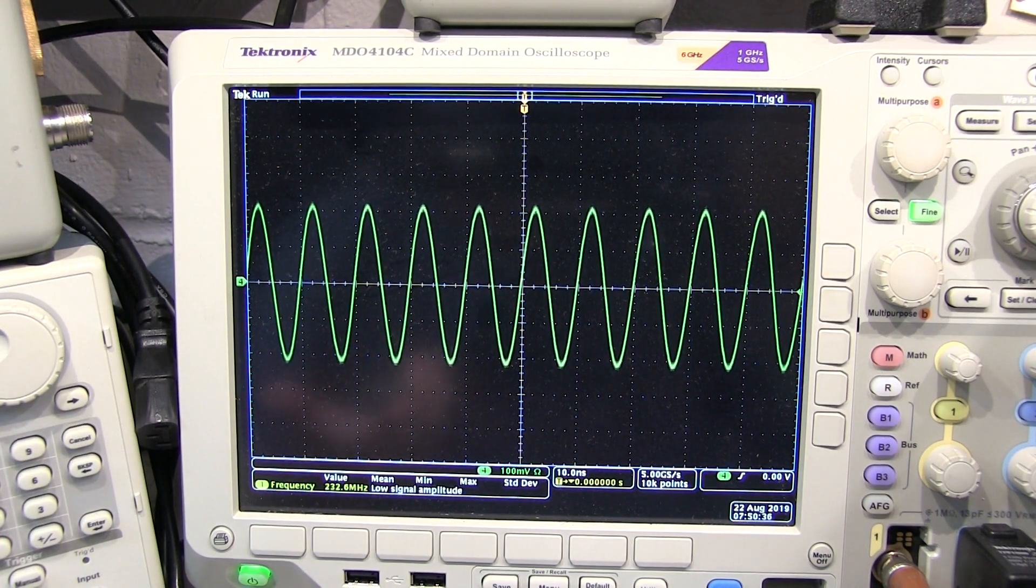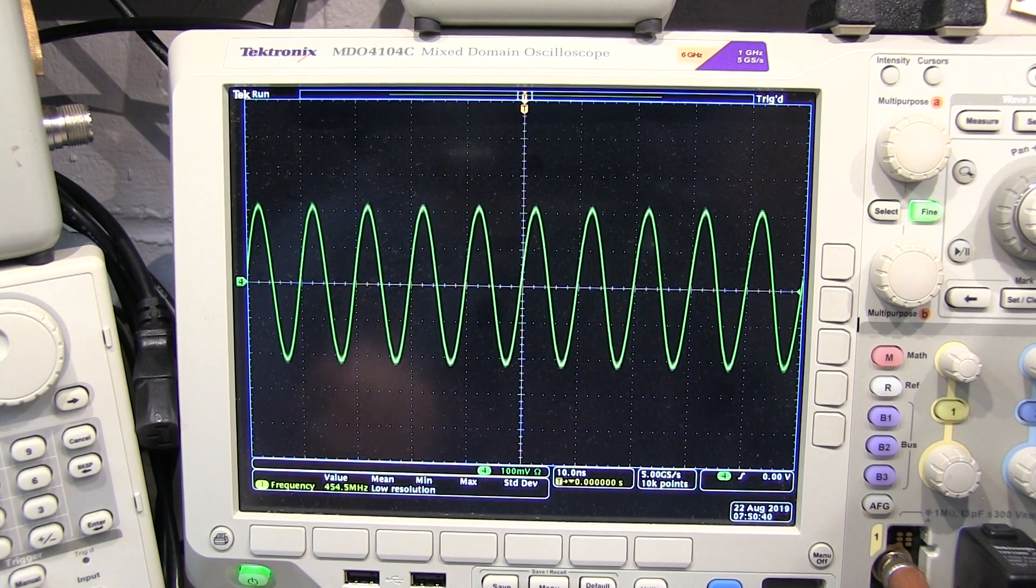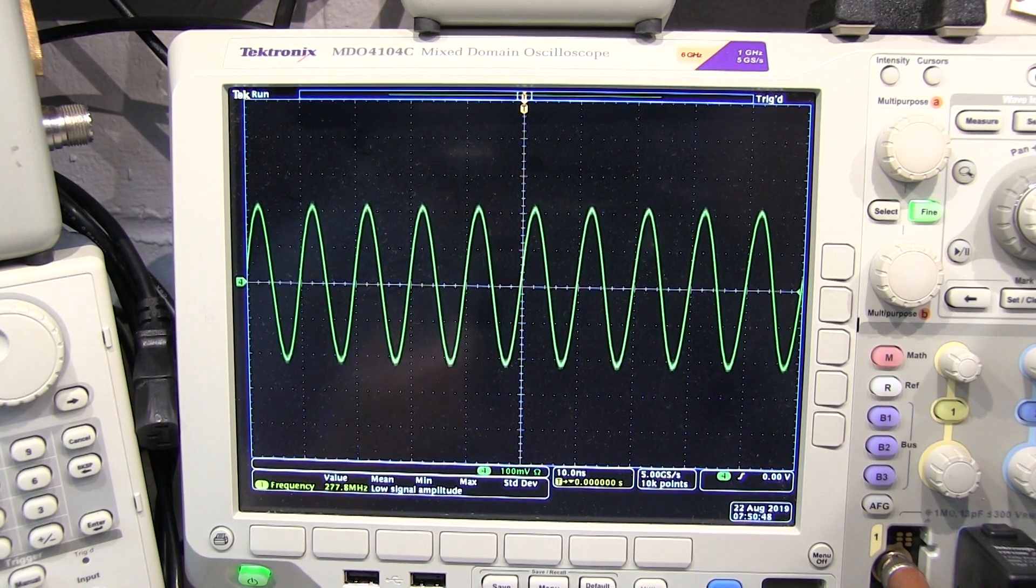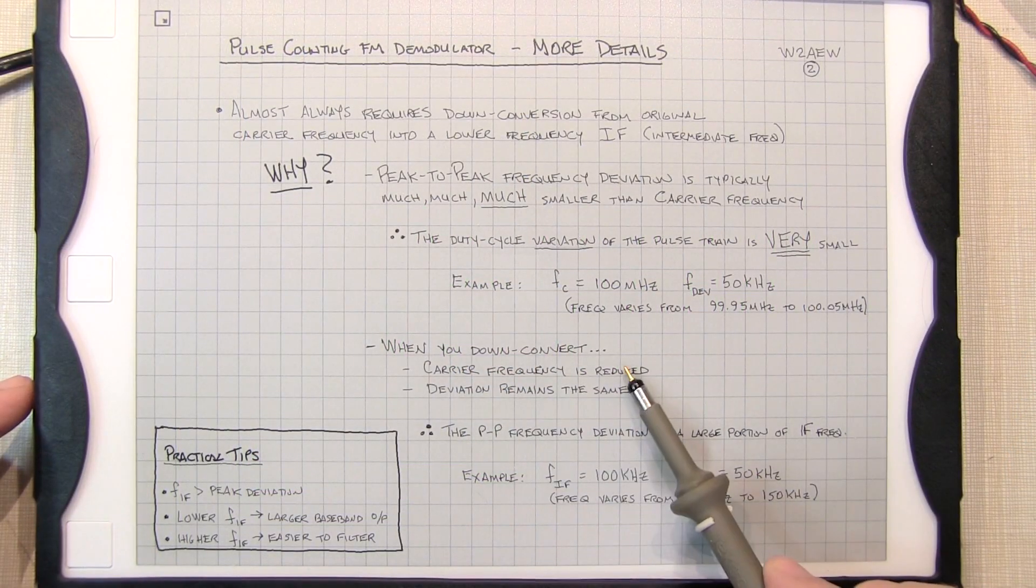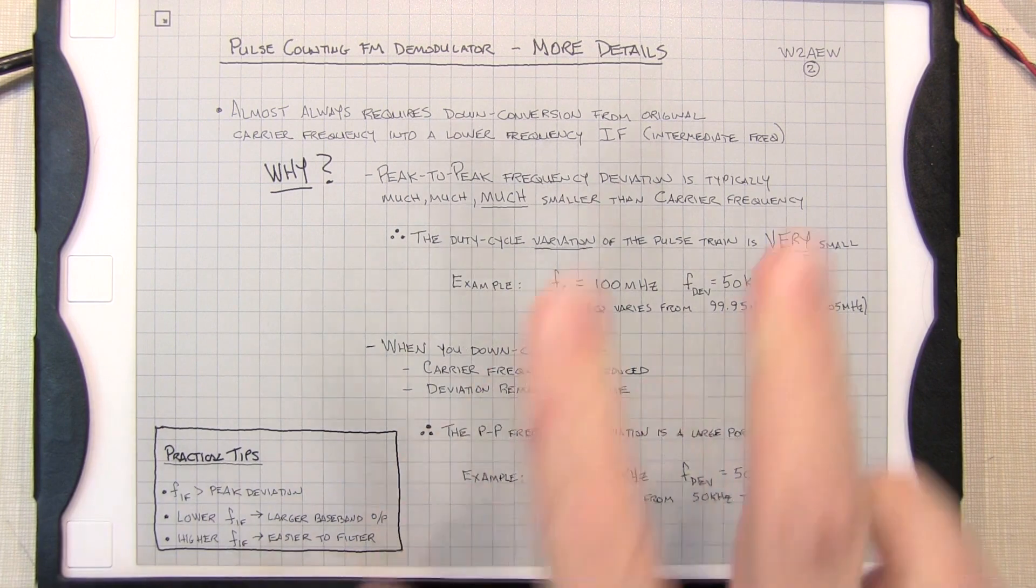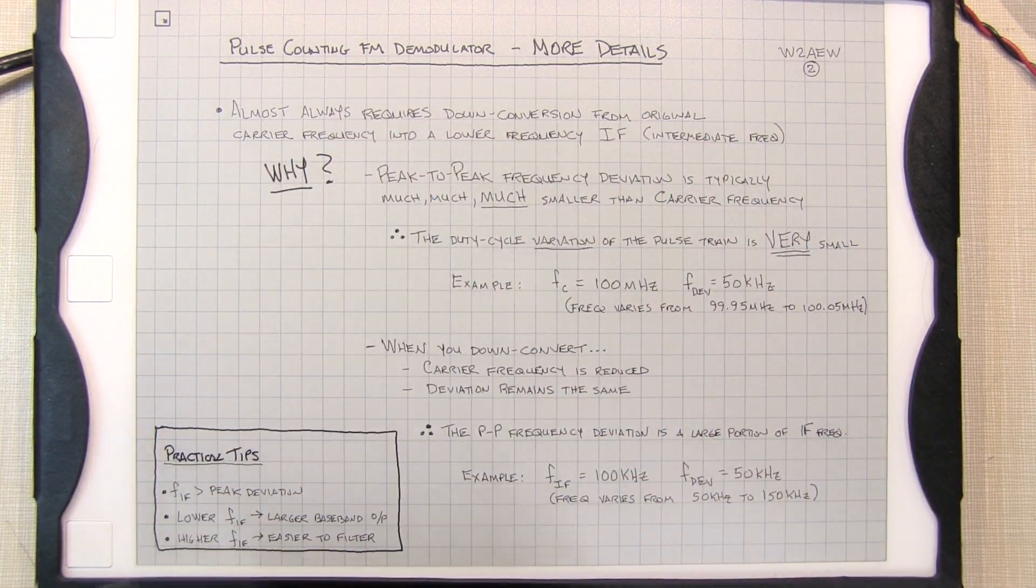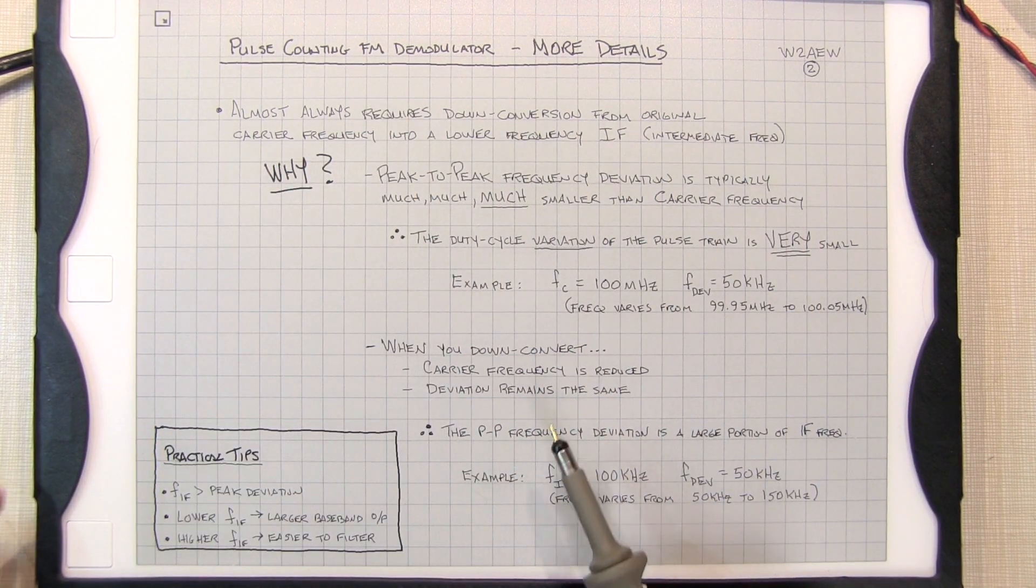And of course since we can't really see it, the duty cycle variation would also be very small. So therefore the detected response out of the pulse counting detector would be extremely small and unusable. So we really need to down convert the signal. Now when we down convert the signal, the carrier frequency will be reduced. We'll essentially just shift the carrier down in frequency, but the deviation remains the same.